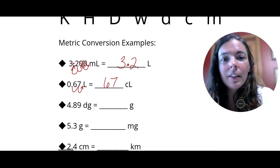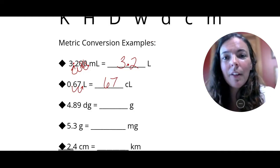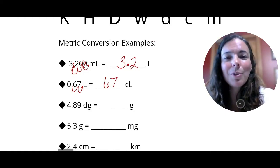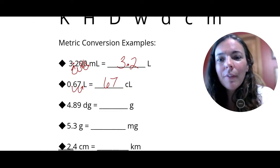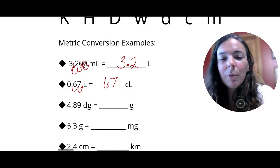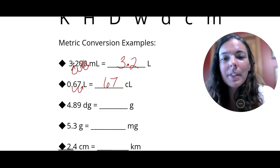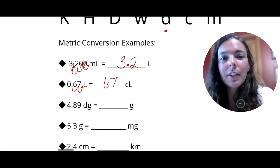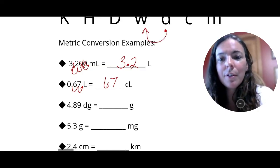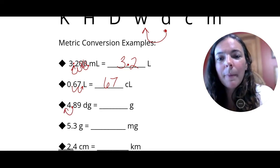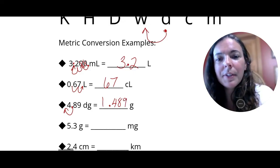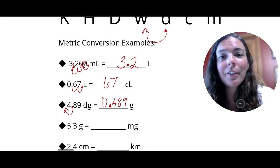So just swooping the decimal one way or the other, this mnemonic helps us decide which way that is. So if I have 4.89 desigrams, how many grams would that be? Well, I have desigrams. I'm going once to the left. So where my decimal is, go once to the left. And this would give you 0.489. We want to have a zero in front of that decimal just so it's very clear because sometimes a decimal can get lost really easily.